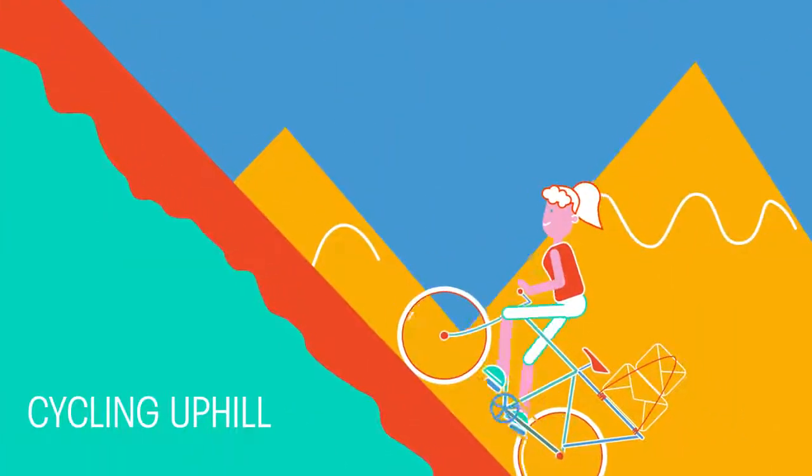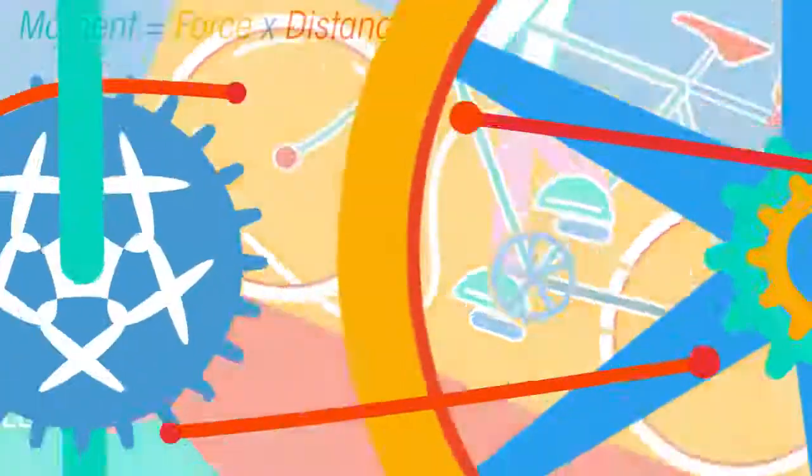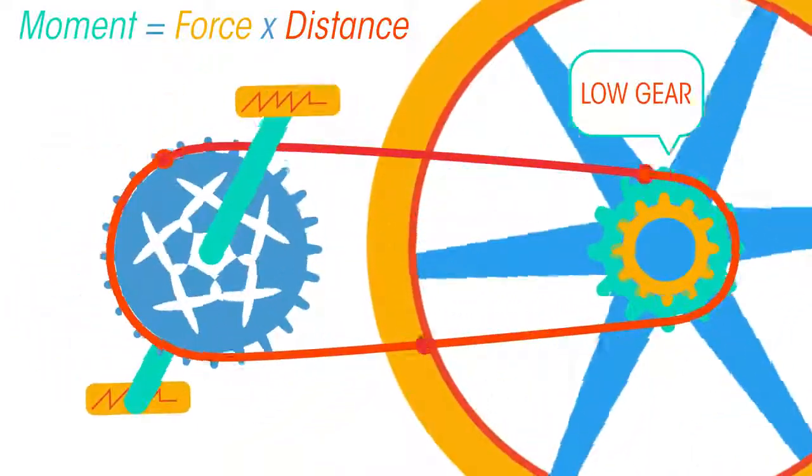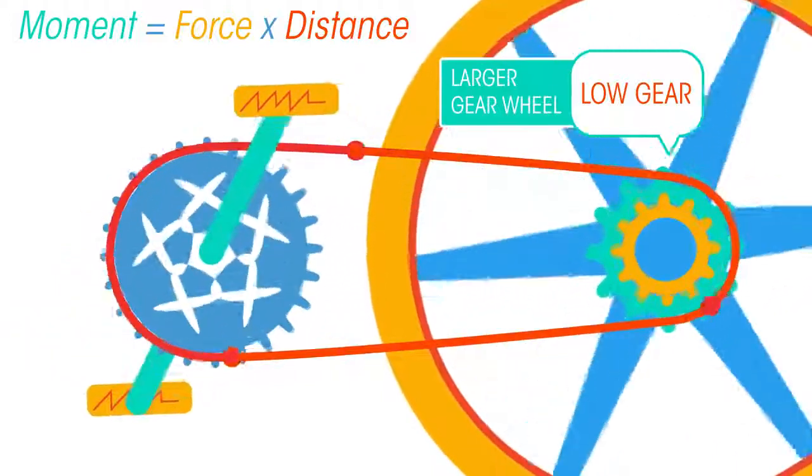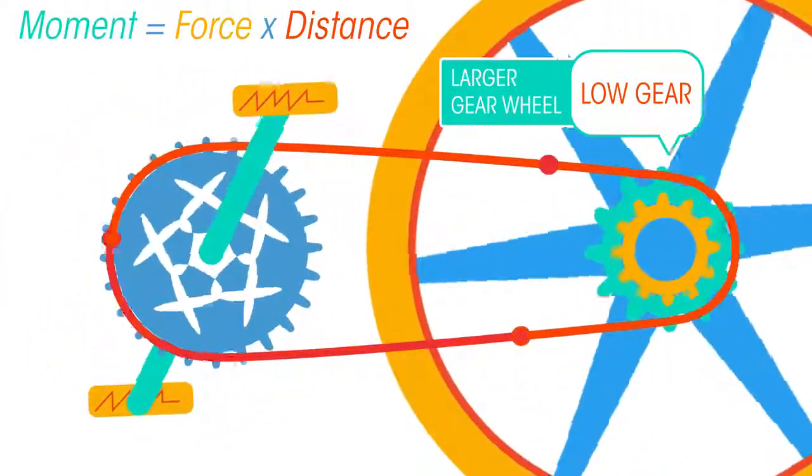This is helpful when cycling or driving up a hill, compared with going downhill and quickly. To cycle uphill, you select a lower gear, which is a larger gear wheel. Therefore, your force exerted on this gear gives a bigger moment, helping you power uphill.